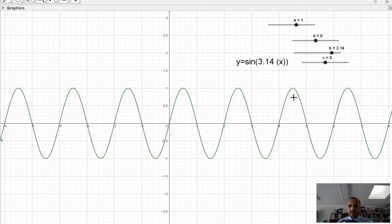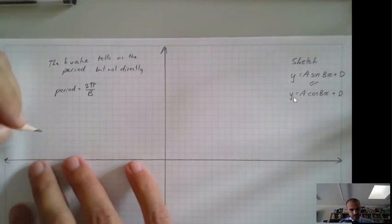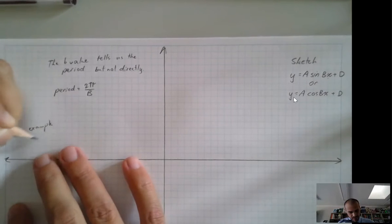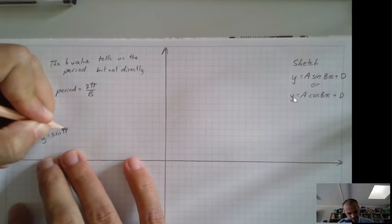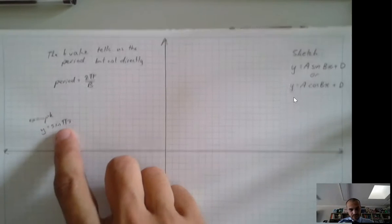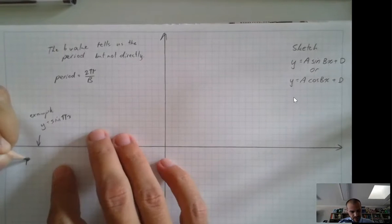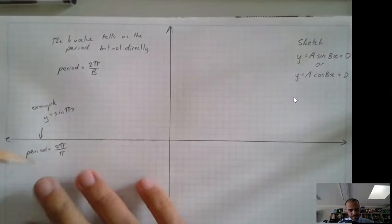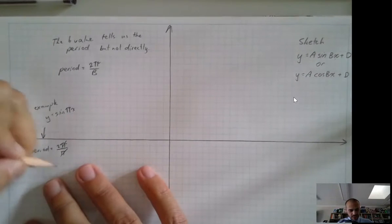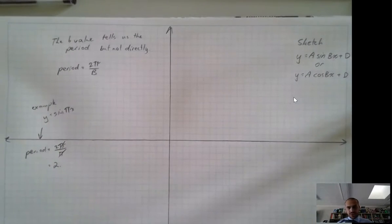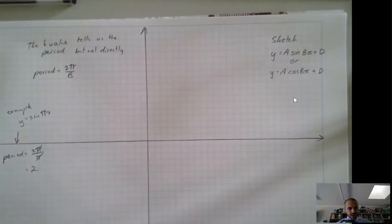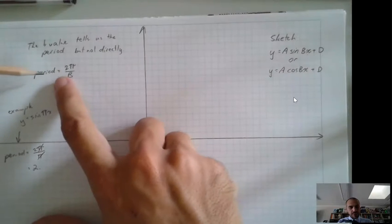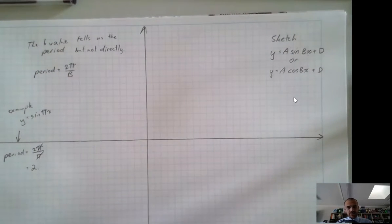In this case, the b value is 3.14, is pi. So in this particular case on the screen, which is example, if our equation is y equals sine pi x, so the b value is pi, then the period equals 2 pi on pi. And then the pi's cancel each other out, and our period is just simply the number 2. So now that we know that, now that we understand that the b value controls the period, but not directly, you do have to do a little bit of maths here, we can do a question.